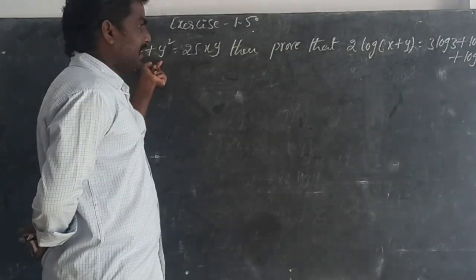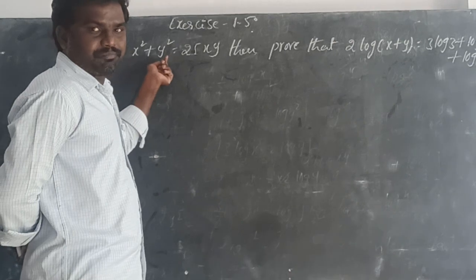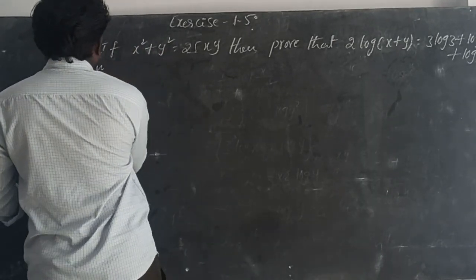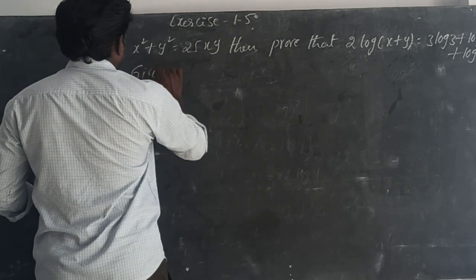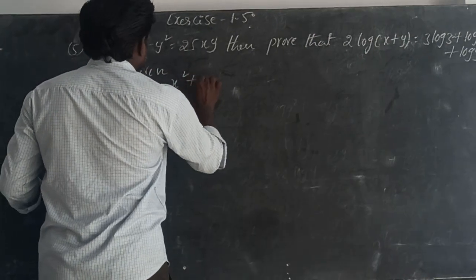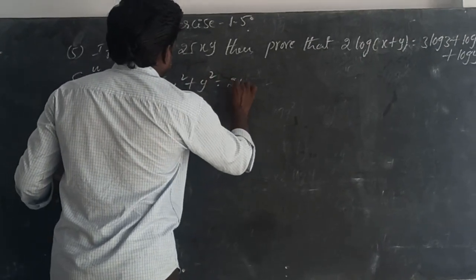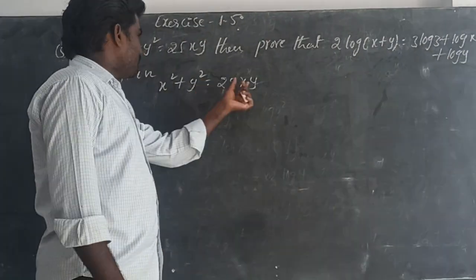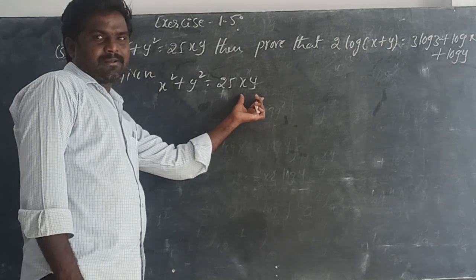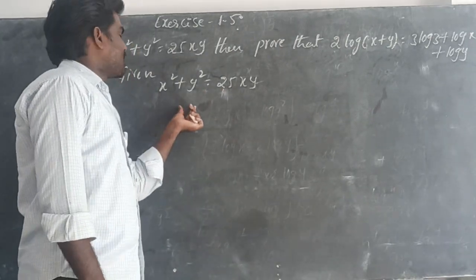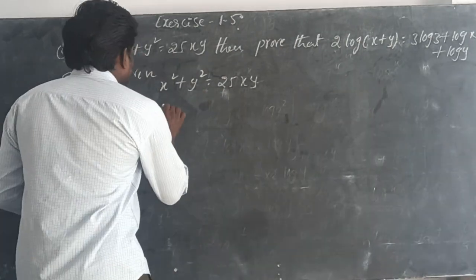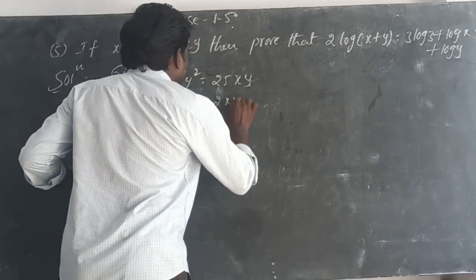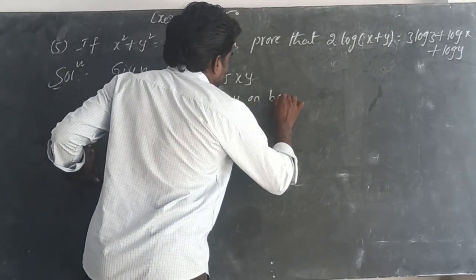But they have given that x squared plus y squared equals 25xy. When you add 2xy on both sides, it becomes x squared plus y squared plus 2xy, which gives us (x+y) whole square.